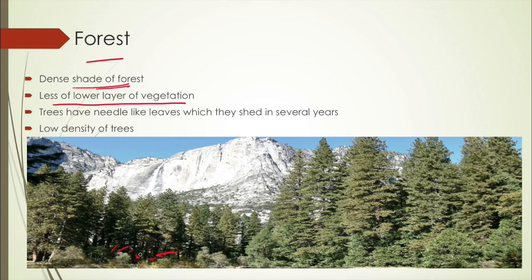Because sunlight doesn't reach the lower levels — similar to a rainforest — there is very little lower-layer vegetation. The leaves of the trees are needle-like, which is why they are called needle leaf forests. Unlike deciduous forests, they don't shed their leaves every year but rather once every many years.